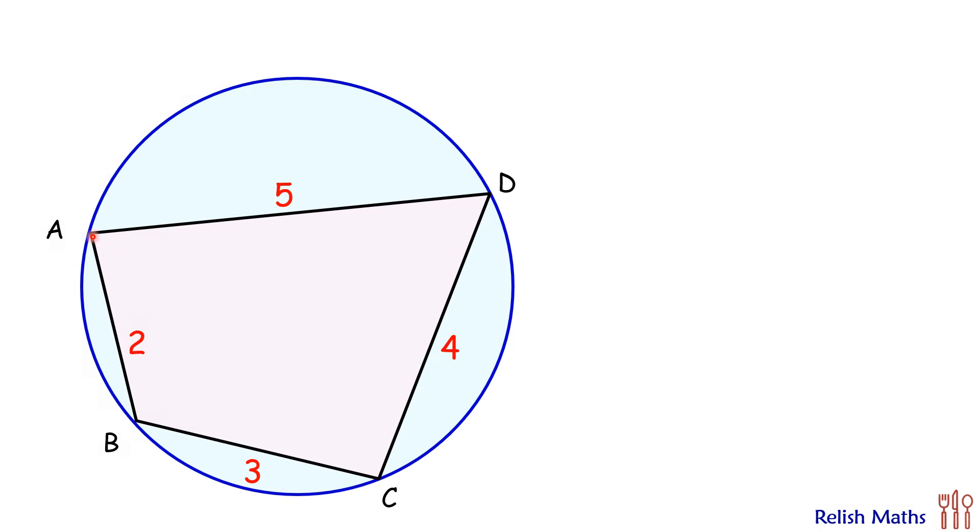Let's start by joining the diagonal of quadrilateral AC. Let's assume this angle D here is alpha degrees. Thus, this angle B—we know that in a cyclic quadrilateral, the opposite angles are supplementary—so angle B will be 180 minus alpha.